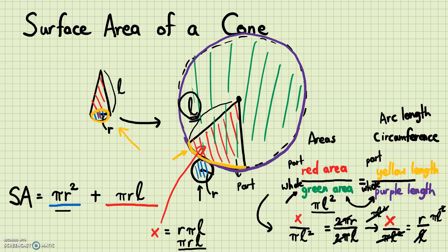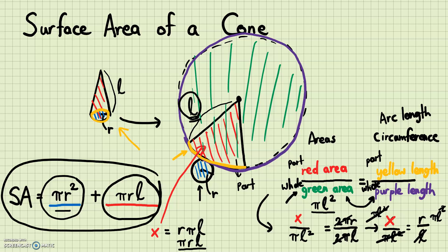So to find the surface area, you just need to add πR² — the area of the blue piece — plus πRL — the area of the pizza piece. If this whole process of deriving the formula has been confusing, don't worry too much about that. Just memorize this formula: the surface area of a cone equals πR² + πRL, where R is the radius of the base and L is the slant height of the cone.